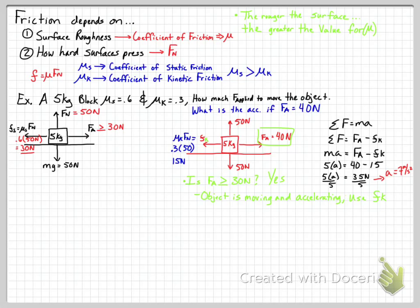Once the object is moving, we've overcome the static friction force that was keeping it stationary. We pushed hard enough to get it moving, so now the object is accelerating. We then use kinetic friction to calculate the acceleration using the applied force. Remember, we use normal force because the weight of the object never really changes — even in free-fall the weight is the same. Normal force tells us how much the surface is pushing back on the object, which is what matters for friction. We'll go over more examples in class.